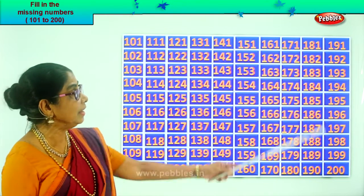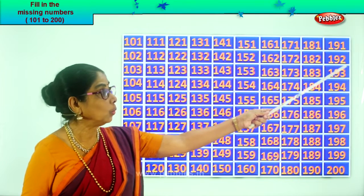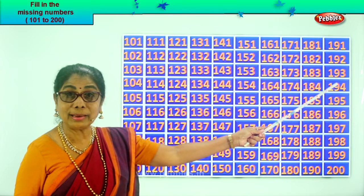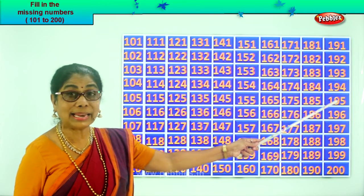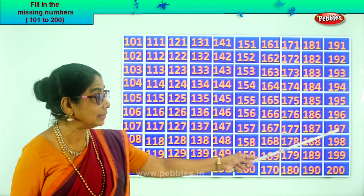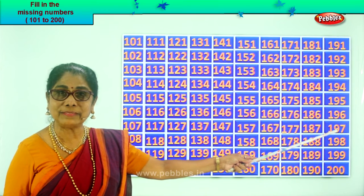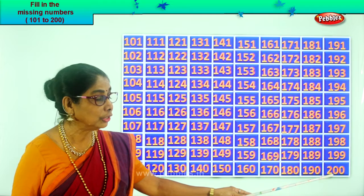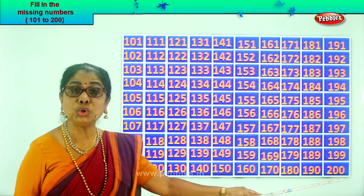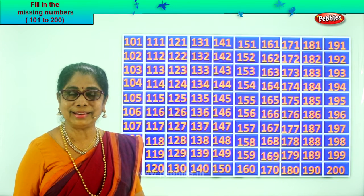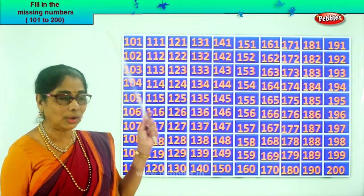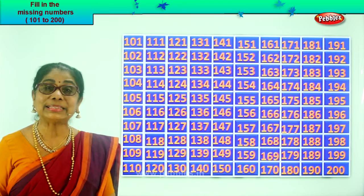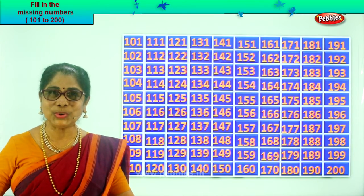Let's read the last column again: 191, 192, one hundred and ninety-three, one hundred and ninety-four, one hundred and ninety-five, one hundred and ninety-six, one hundred and ninety-seven, one hundred and ninety-eight, one hundred and ninety-nine, two hundred. What is the last number? Two hundred. So you learn to count from one hundred and one to two hundred, fill in correctly the missing numbers. Did you enjoy? Good.